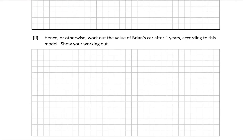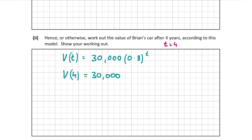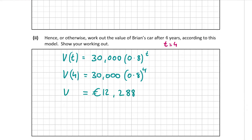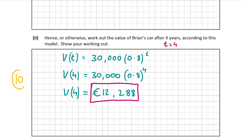B part 2 asks for the value of Brian's car after four years. Using our model, V(4) = 30,000 × (0.8)^4. Be careful entering this into the calculator: type 30,000, then multiply by 0.8 to the power of 4 — making sure brackets are only around 0.8. The answer is €12,288. B part 2 is worth 10 marks, and B part 1 was worth 5 marks.